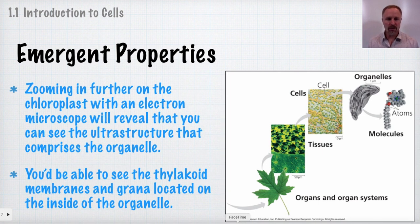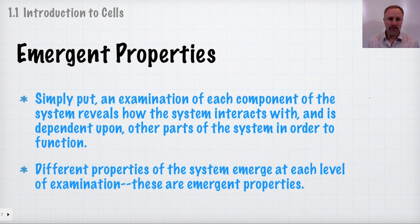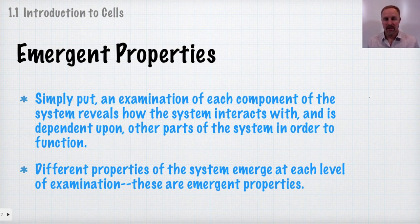If you zoom in further with an electron microscope, you can see the fine ultrastructure — for instance, the components that comprise the chloroplast, one of the organelles of the leaf. You'd be able to see the thylakoid membranes, and those thylakoid membranes together make up the granum. Examining each component of the system reveals how the system interacts with and is dependent upon other parts — these are what we refer to as the emergent properties.